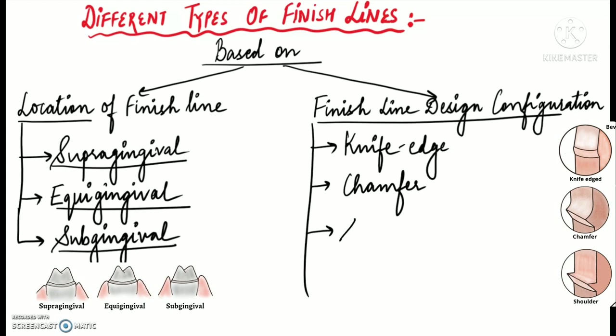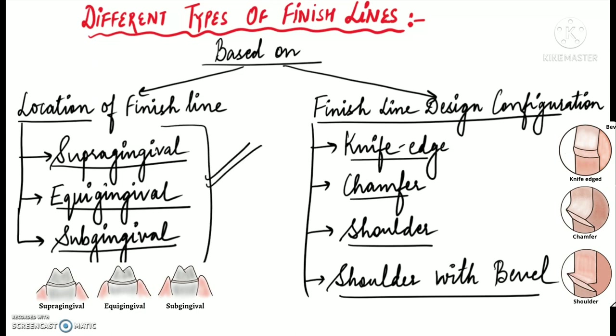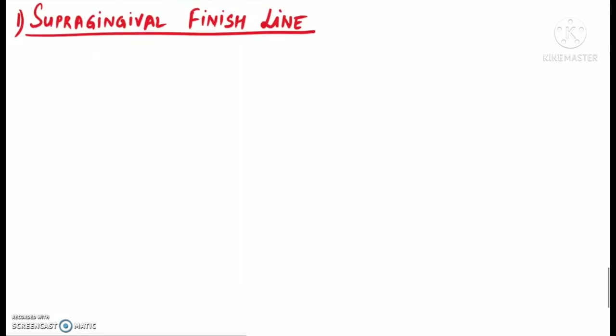Based upon the finish line design configuration there are different types of finish lines like knife-edge finish line, chamfer finish line, shoulder and shoulder with the bevel. So in today's video we'll be talking about different finish lines based on location. Let's start with the supra-gingival finish line.